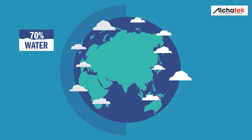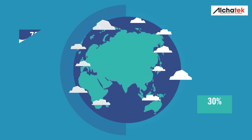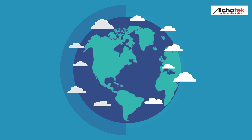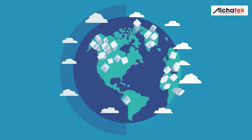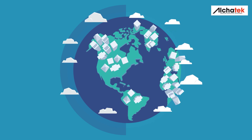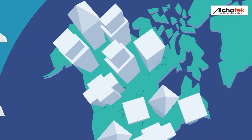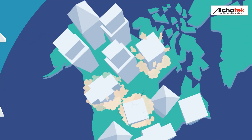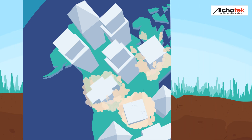Our world is 70% water. That leaves 30% land for us to live on. But not all of the soil under our feet is stable, and that can cause extreme and costly damage to buildings and other infrastructure.